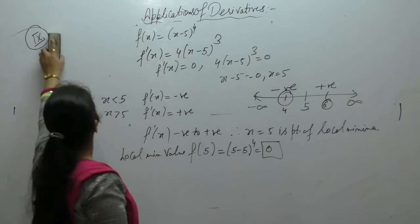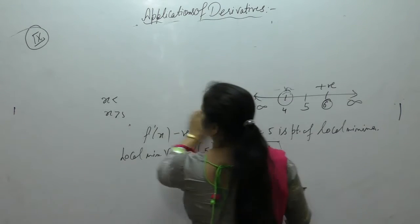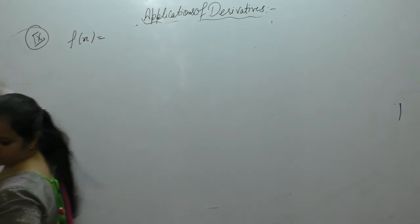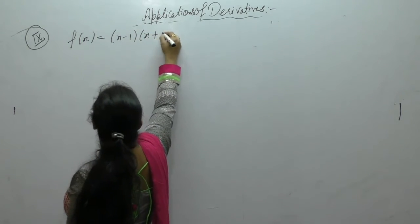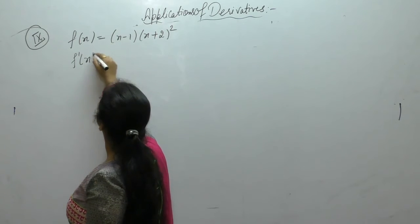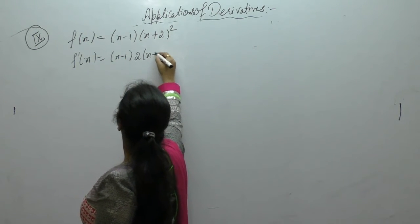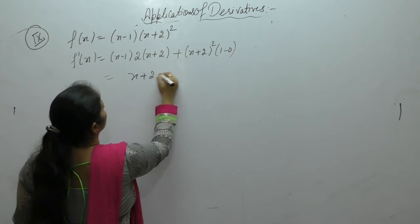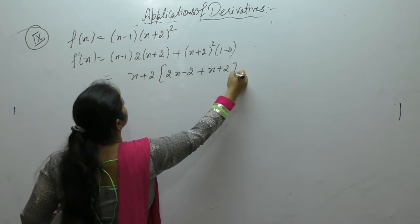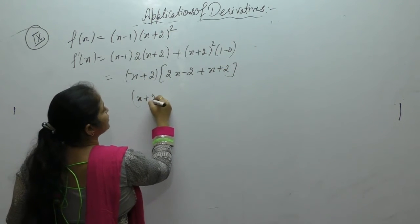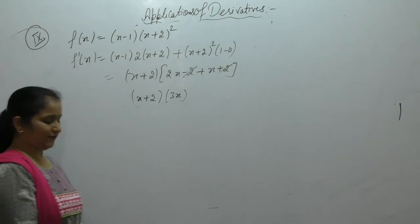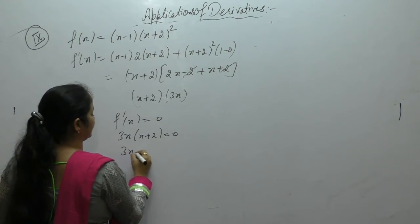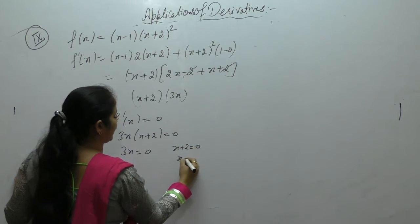Let us take one more example. Let f(x) = (x-1)(x+2)². First find f'(x): (x-1)·2(x+2) + (x+2)². Taking (x+2) common: (x+2)[2(x-1) + (x+2)] = (x+2)(3x). Setting f'(x) = 0, we get x = -2 and x = 0.